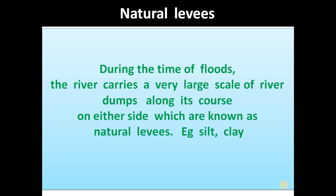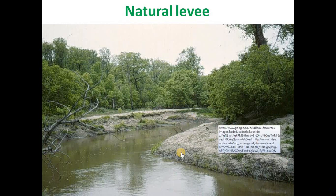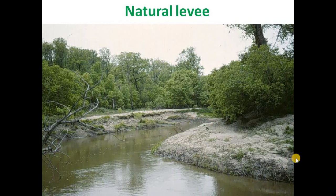Natural levees: during the time of floods, the river carries a large amount of sediment along its course on either side, which are known as natural levees, consisting mainly of silt and clay deposited on both sides of the river. This is very clearly shown in the picture — the natural levee made up of silt and clay on both sides of the river.